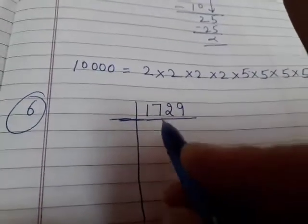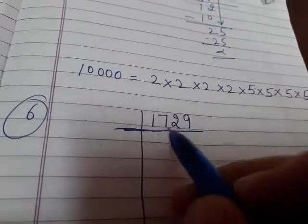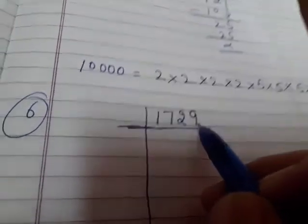First, we do the prime factorization of 1729. It is not an even number, so it is not divisible by 2.